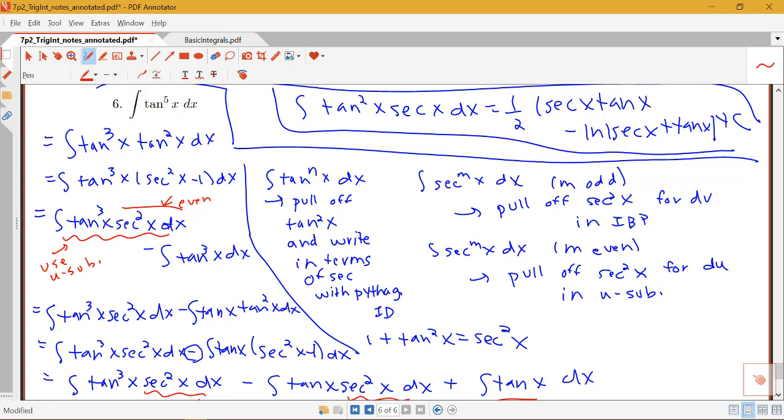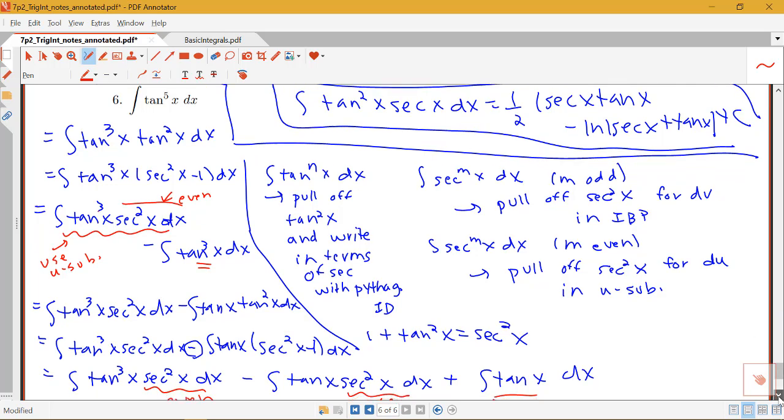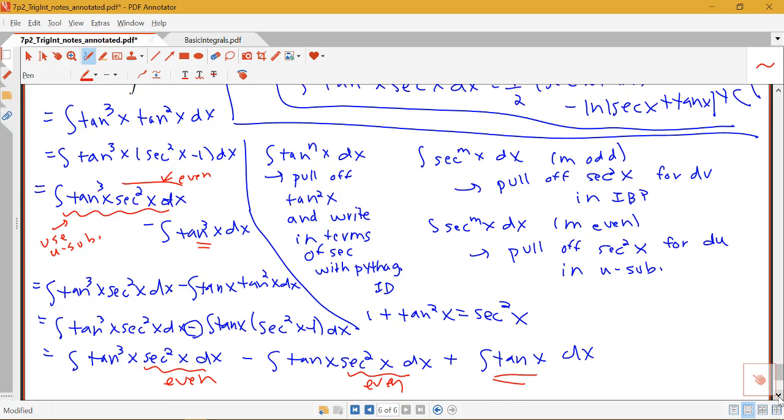...replaced it with secant squared minus 1 and multiplied things through, that reduced the power of tangent that I had to deal with to tan cubed. Use that again, it reduced the power of tangent to just a single power.